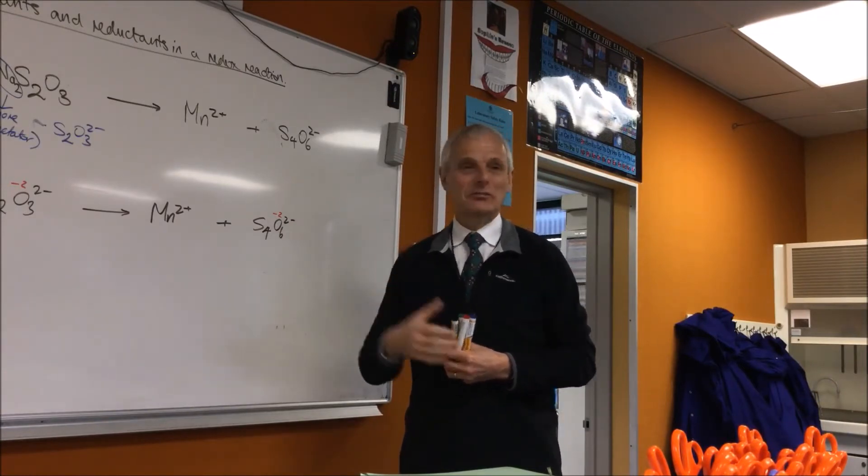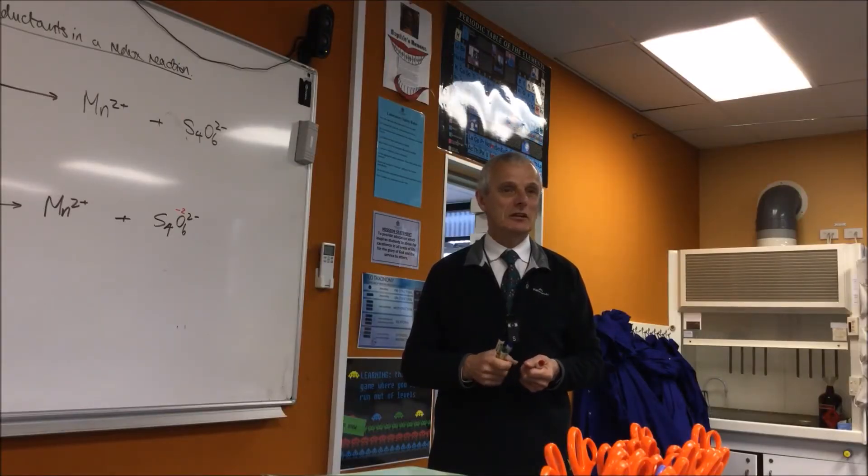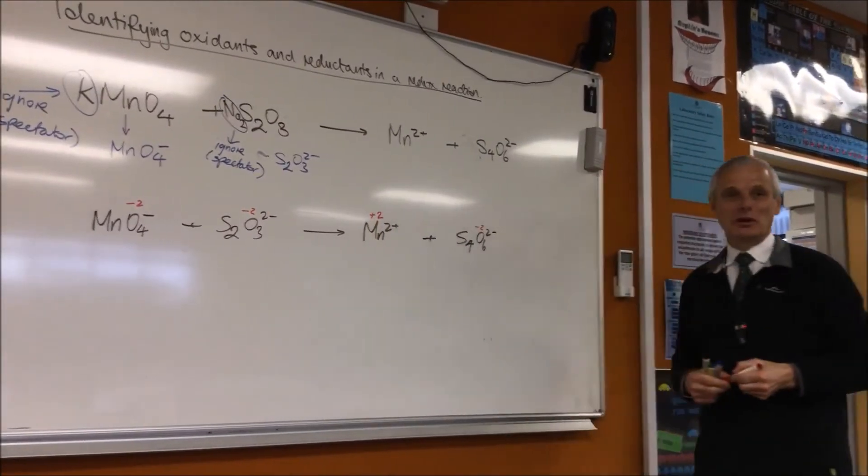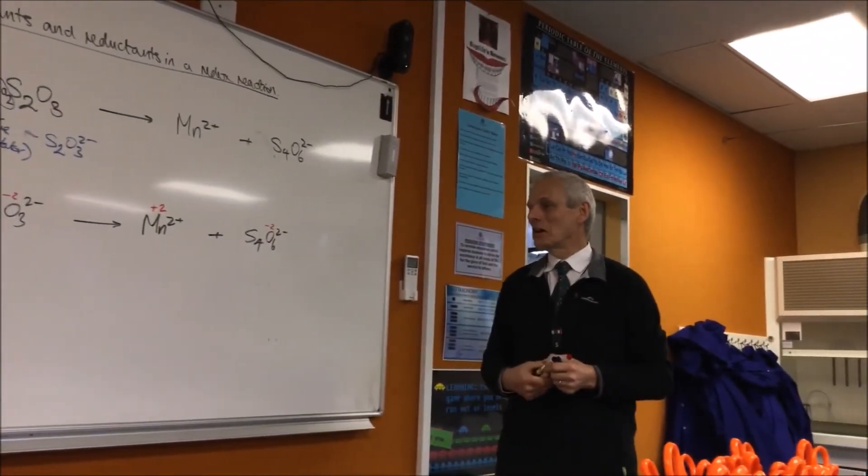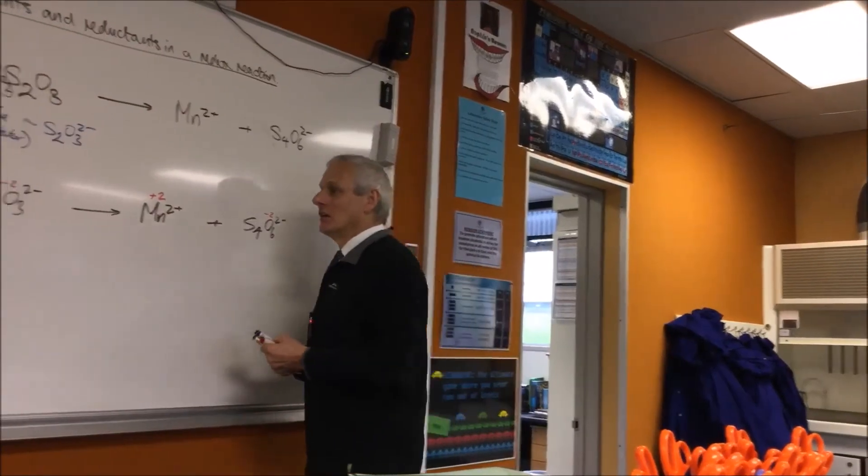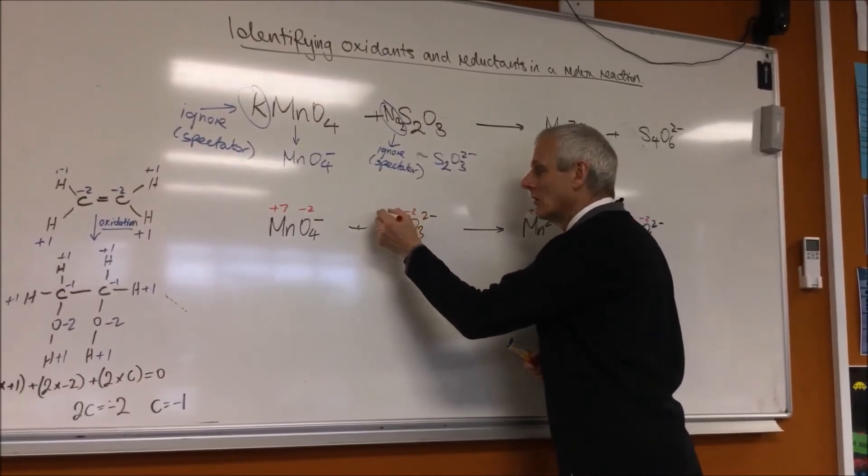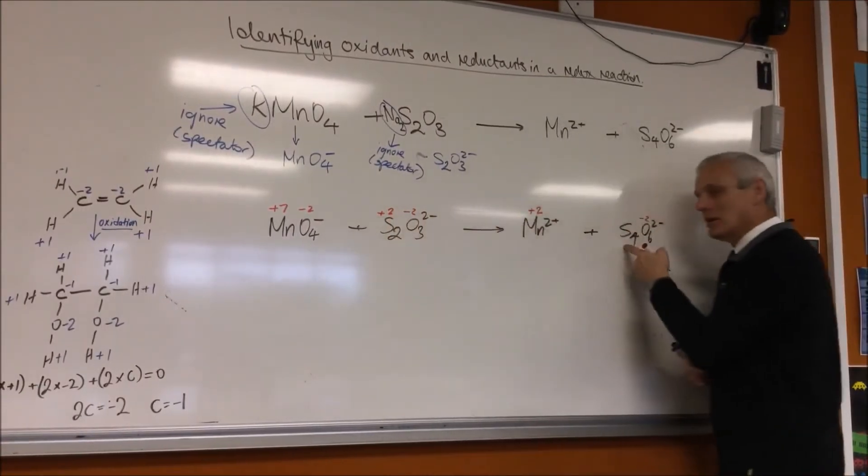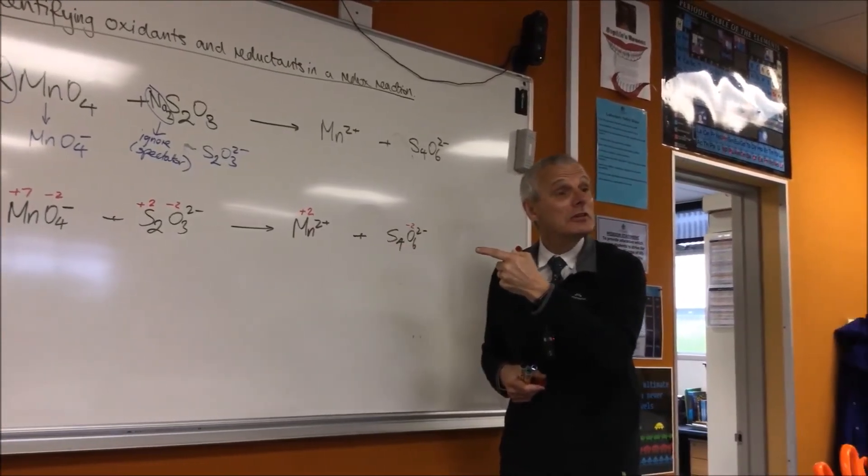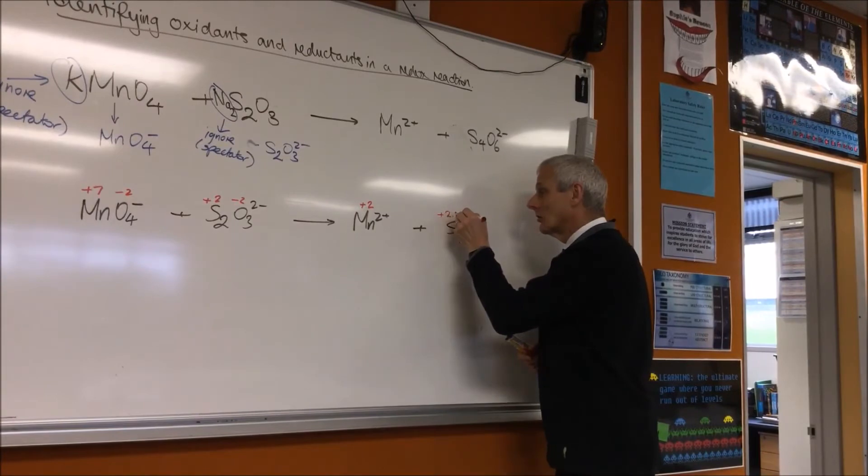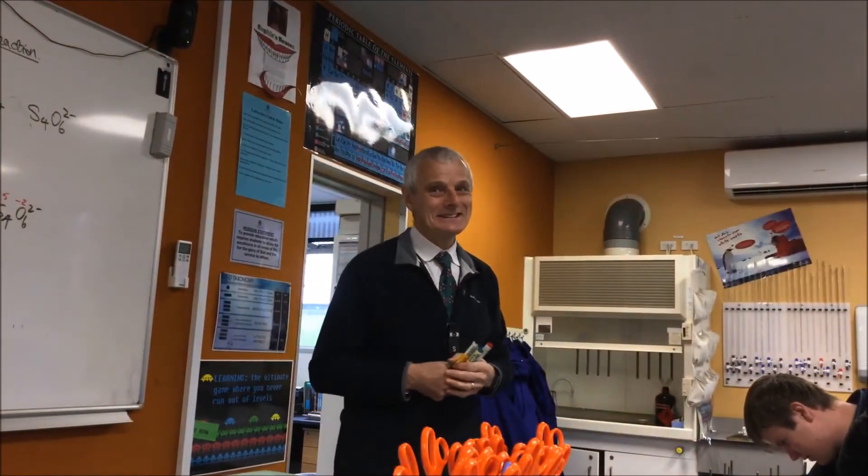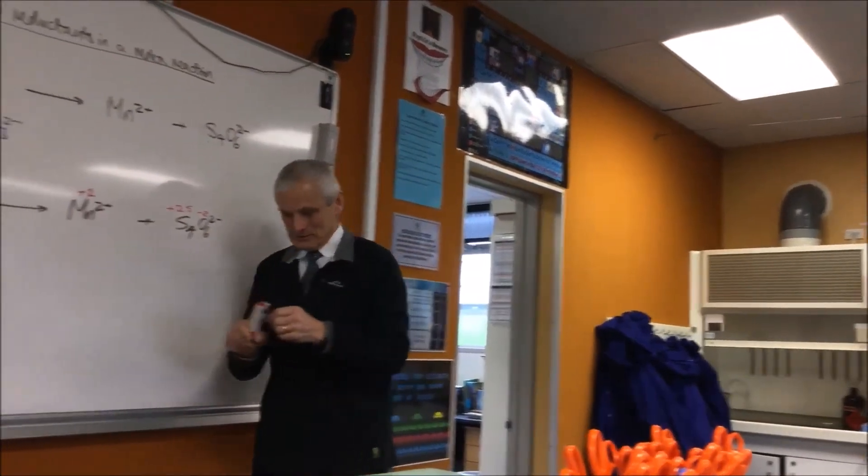Now, you need to do all the others. Off you go. What's the next easiest one? That's going to be plus 2 because it's a monatomic ion. What about this one? Who says they have to be integer numbers?